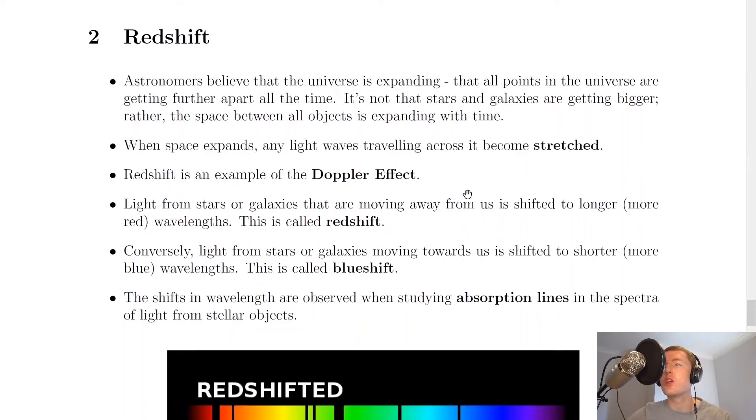Astronomers believe that the universe is expanding, that all points in the universe are getting further apart all the time. It's not that stars and galaxies are getting bigger, rather the space between all objects is expanding with time. That's a key point to remember - stars and galaxies and matter don't get bigger themselves, but it's space that expands over time.